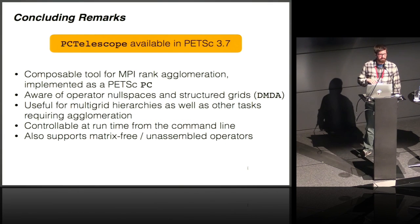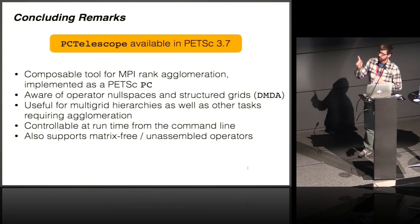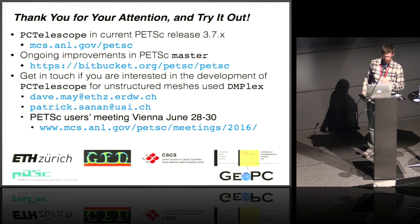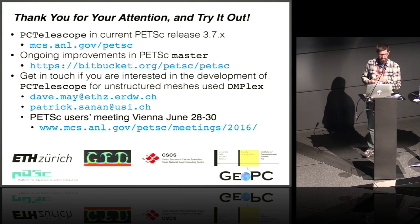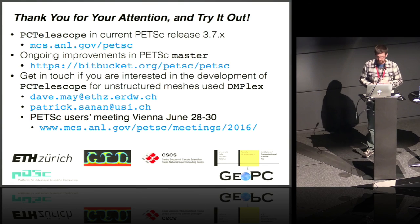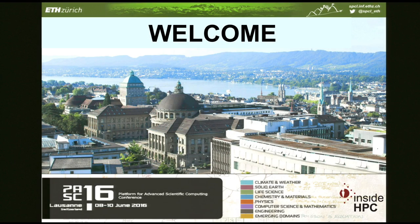If you'd like to try this out, the component is in PETSC 3.7, the current release, implemented as a PC. The current implementation works with assembled and unassembled operators and is aware of the DMDA regular grid class. The contiguous or strided subcommunicator generation option was added just barely too late for the release, so that's in the master branch. If you're interested in DMPlex unstructured grids with this, please contact Dave May or myself, or come talk to us at the PETSC users meeting in Vienna in a couple of weeks. Thank you for your attention.